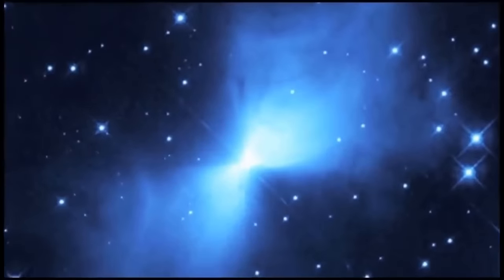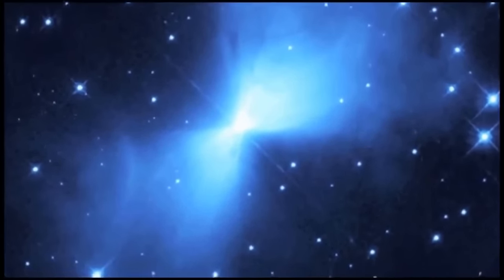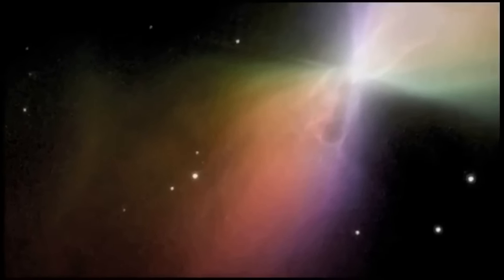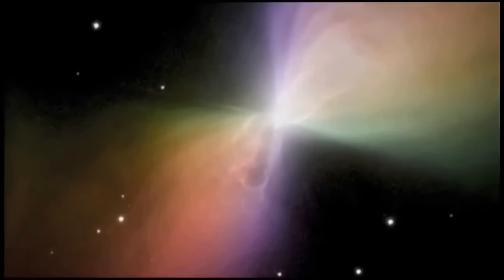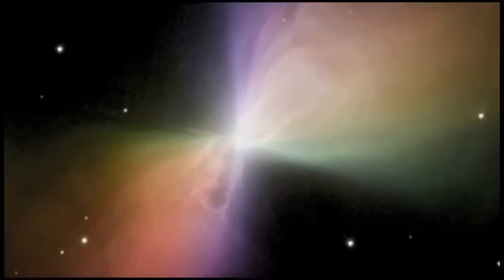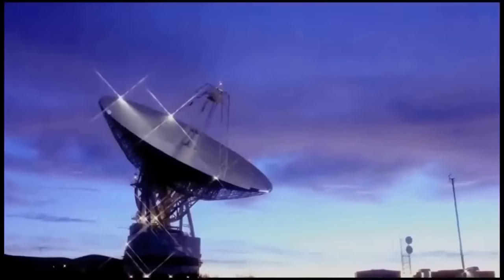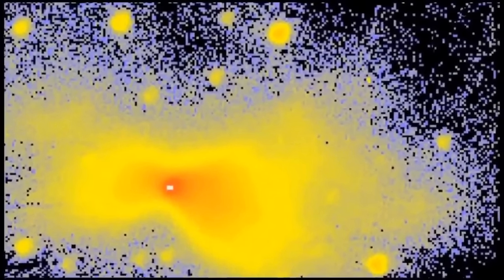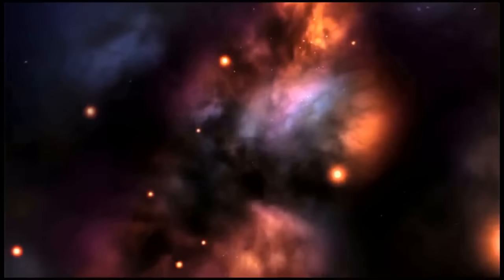So far, the coldest place observed in nature is the Boomerang Nebula. Here, a dying star ejected its outer layers into space at 600,000 kilometers per hour. As the expanding clouds of gas became more diffuse, they cooled so dramatically that their molecules fell to just one degree above absolute zero, the total absence of heat. That's around a billion trillionths of a joule.